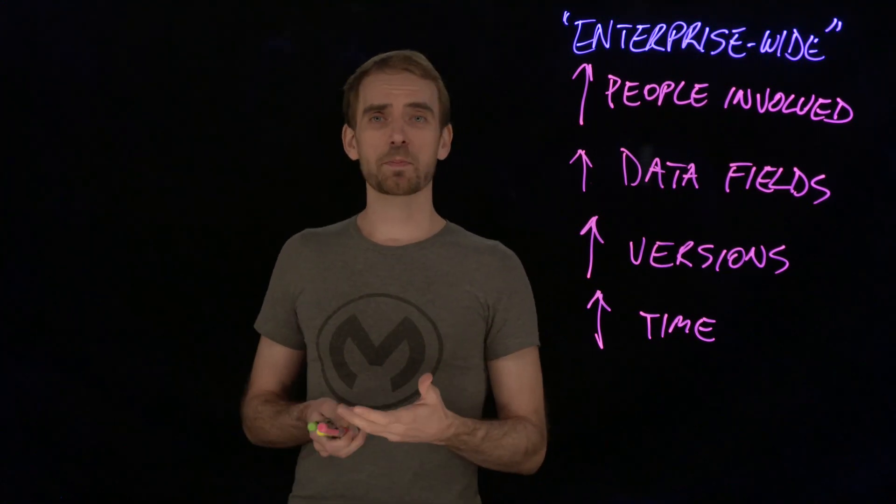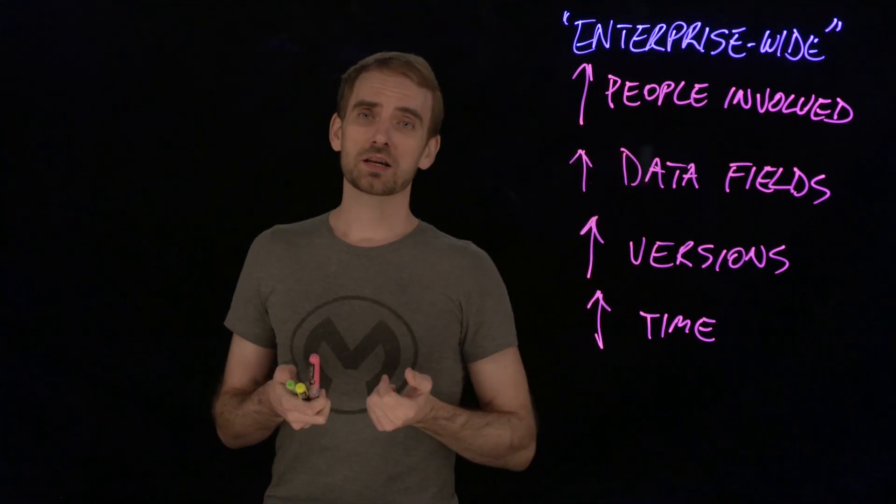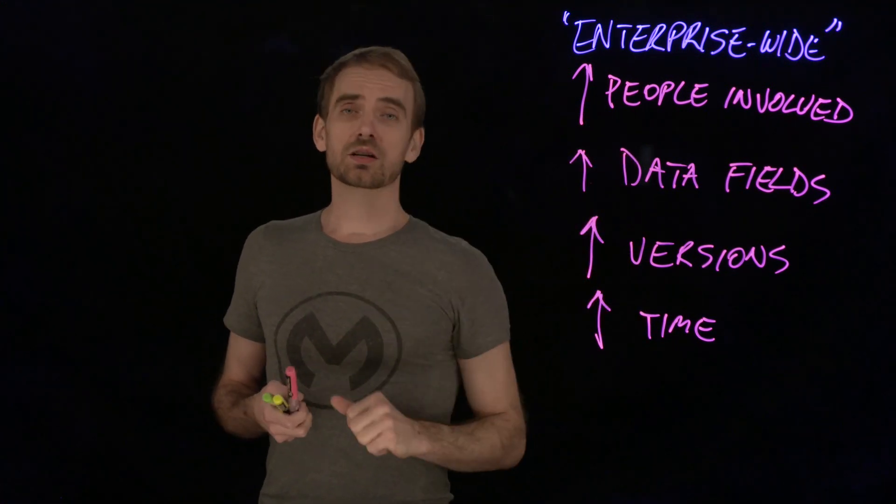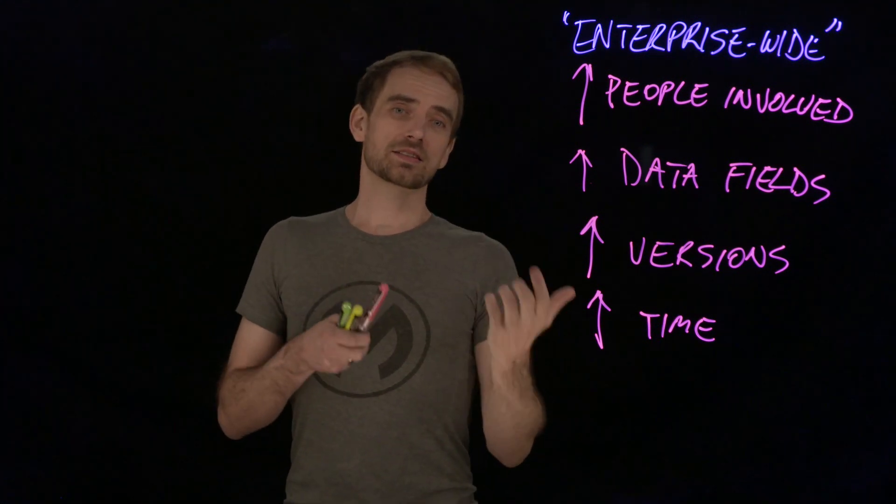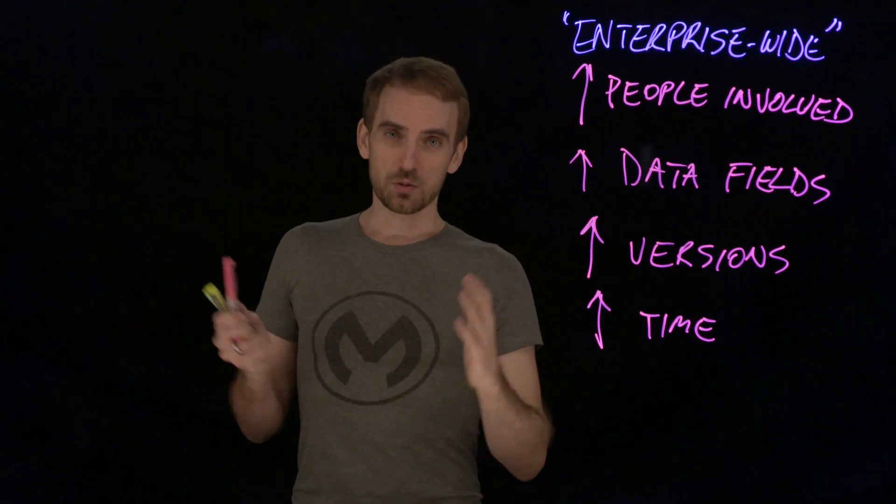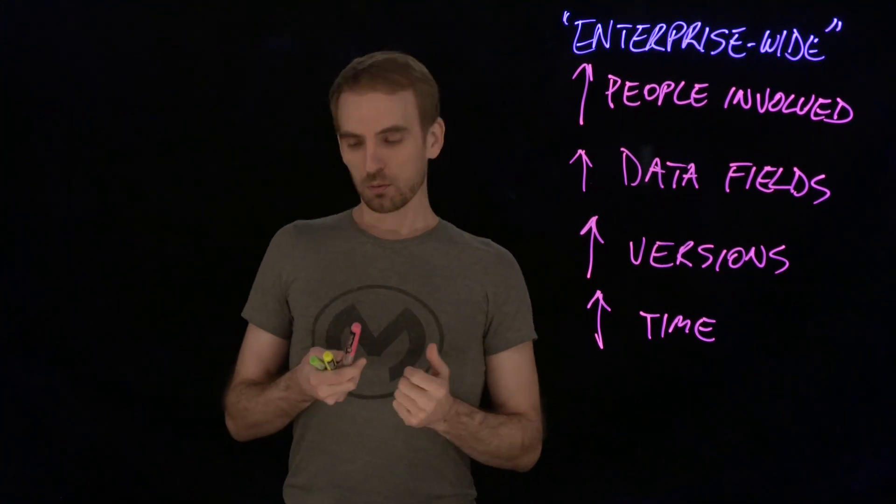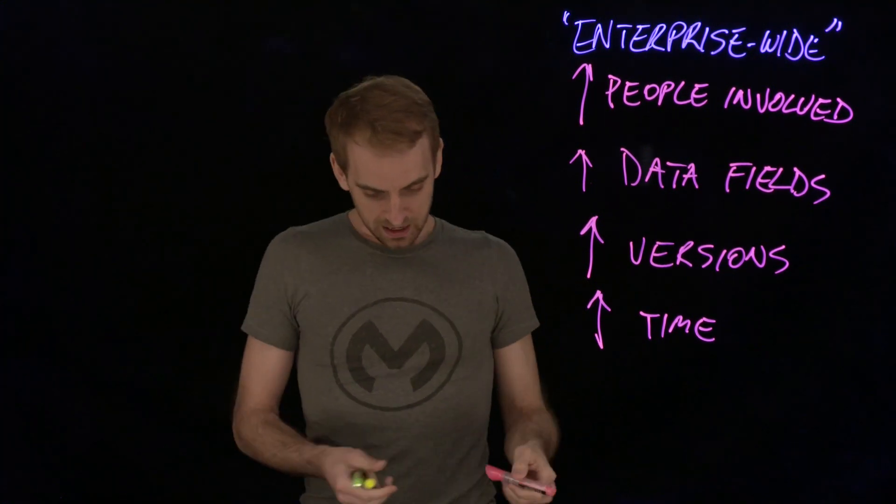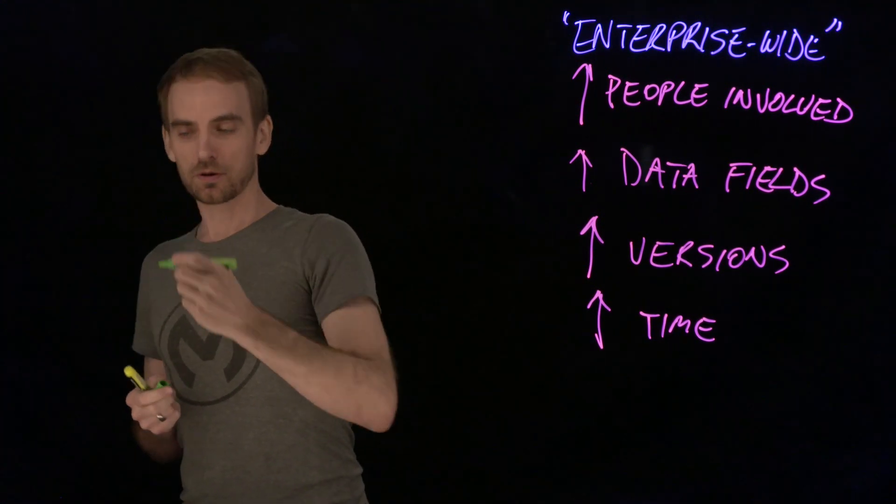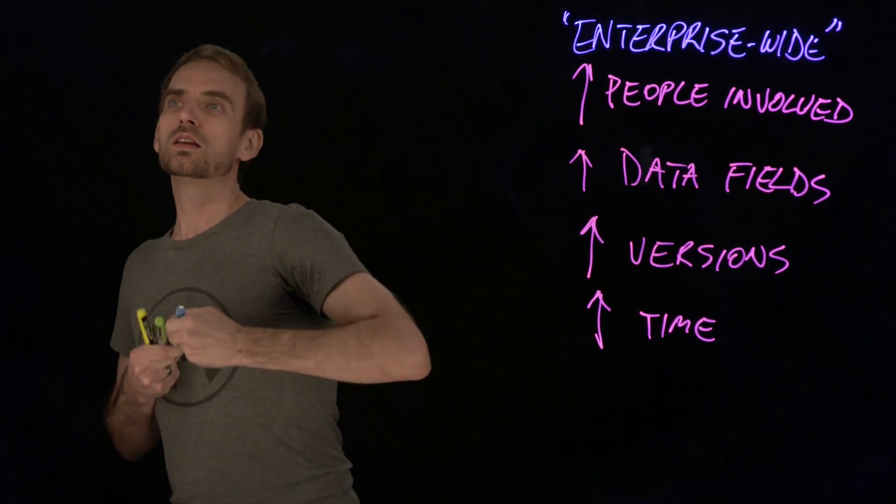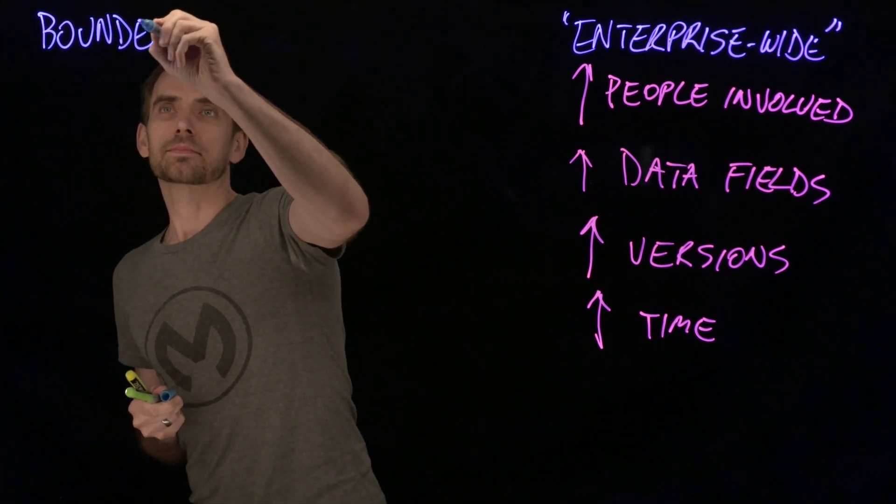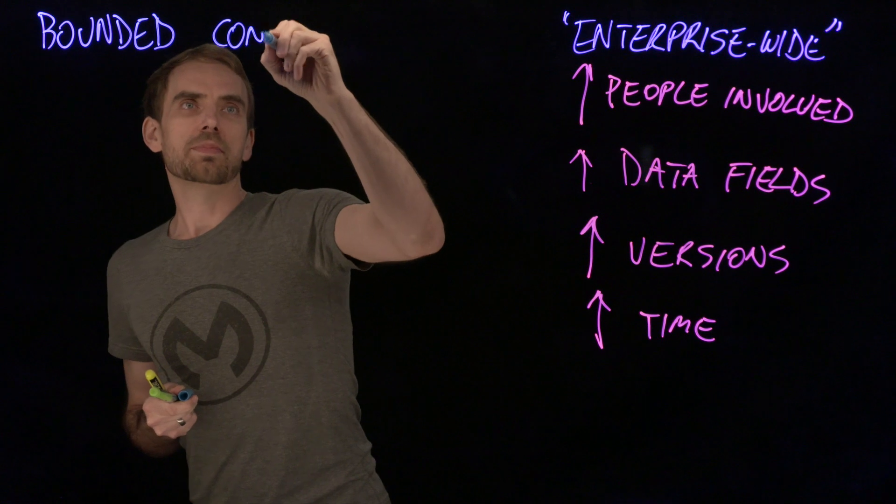Now let's look at narrowing the scope a bit because this is the way to solve some of these problems. Rather than trying to boil the ocean, which is essentially what enterprise-wide is doing, let's think about narrowing it down to a given domain. So bounding the scope of what we've got. So if we talk about instead of doing everything for the entire enterprise, we call it a bounded context.